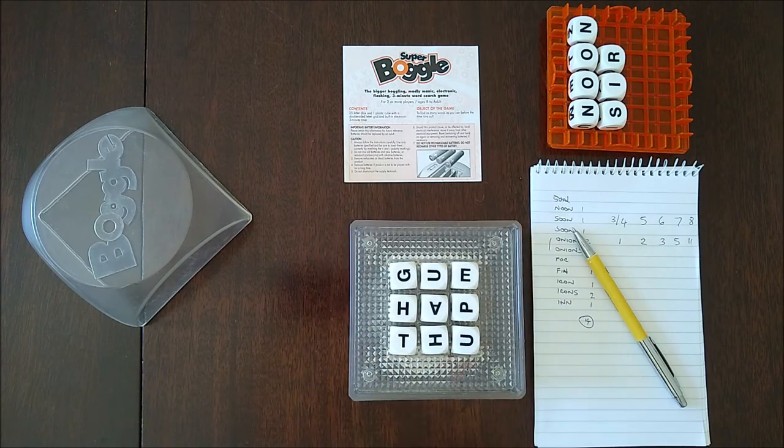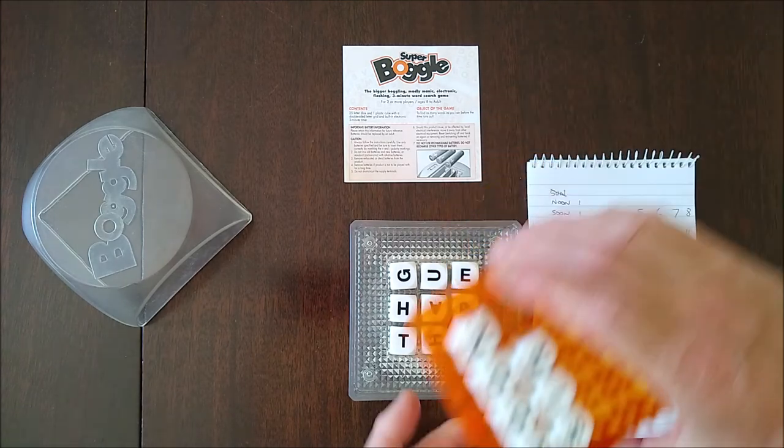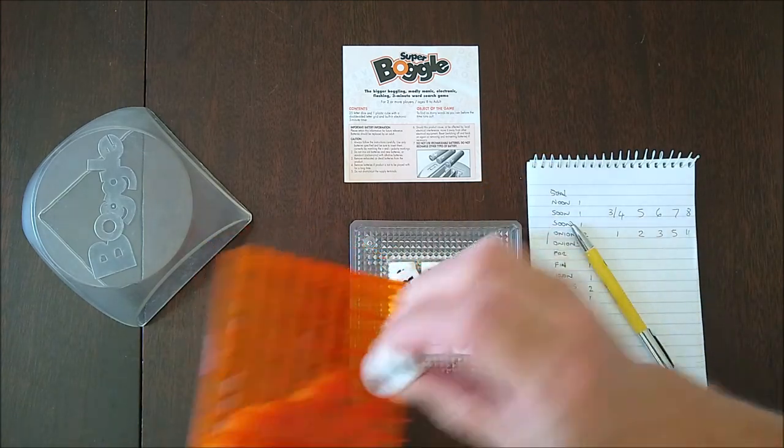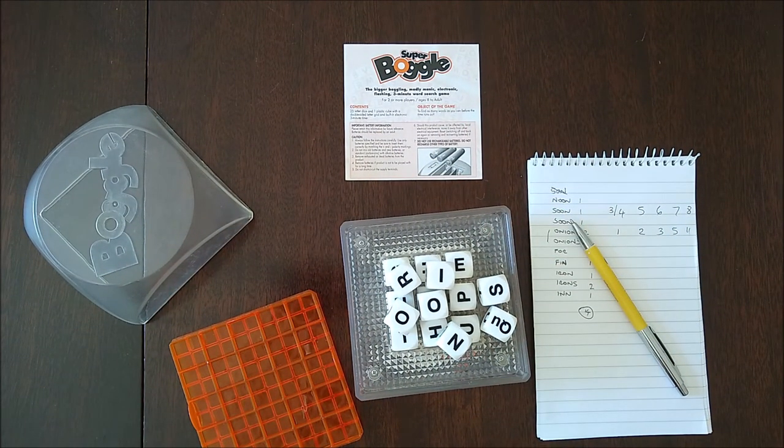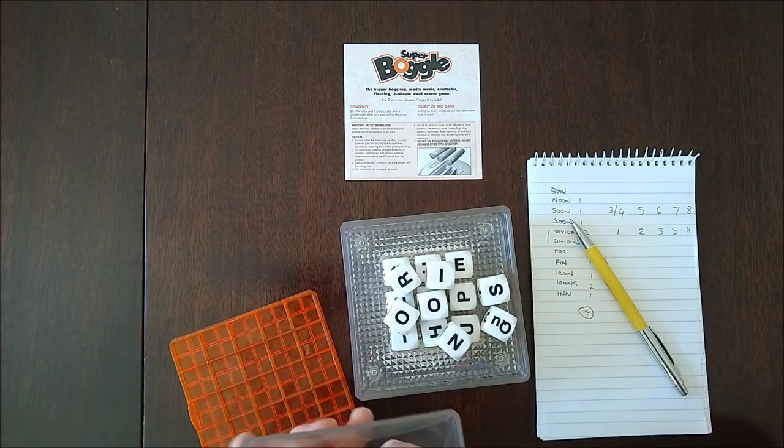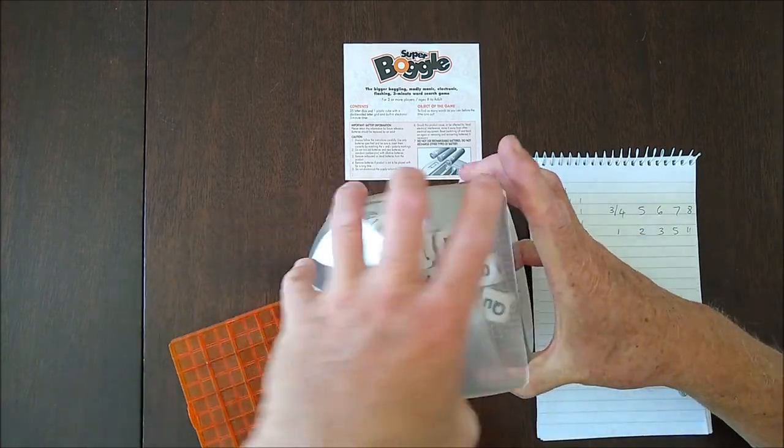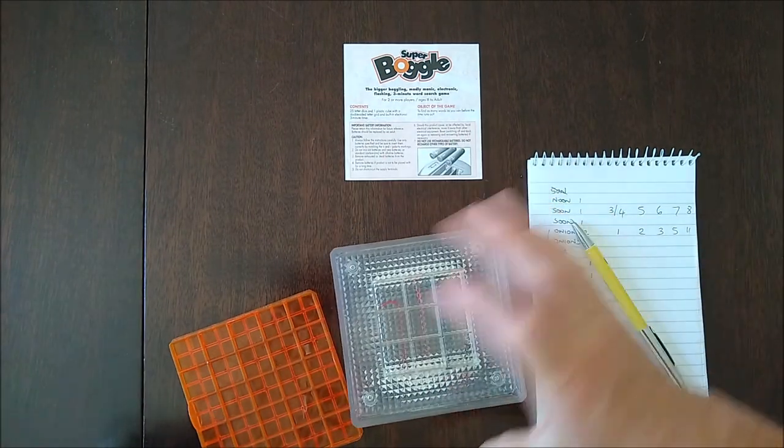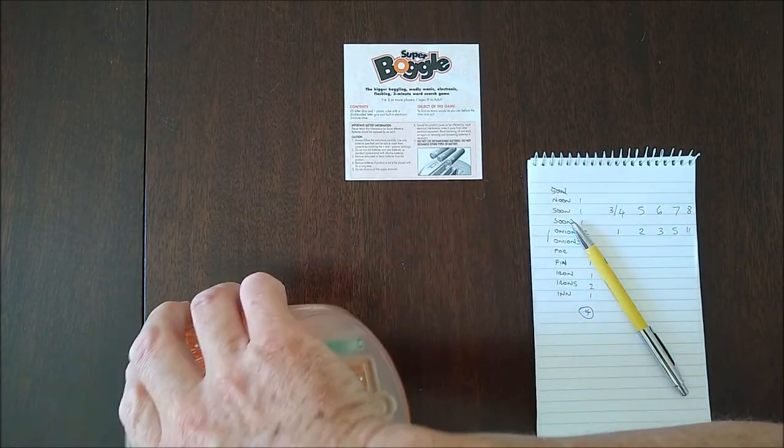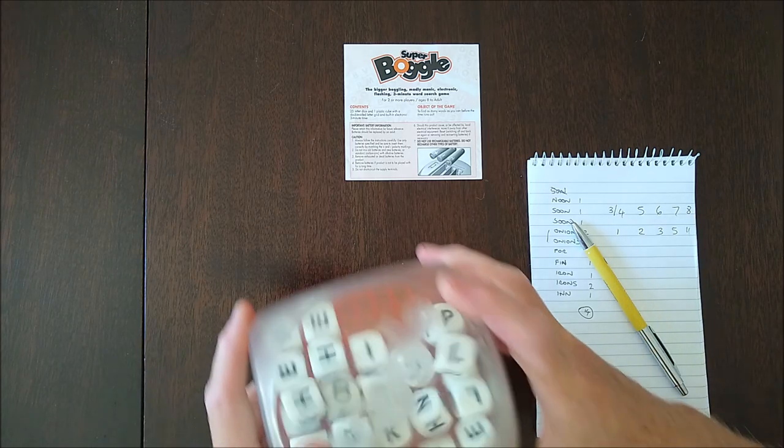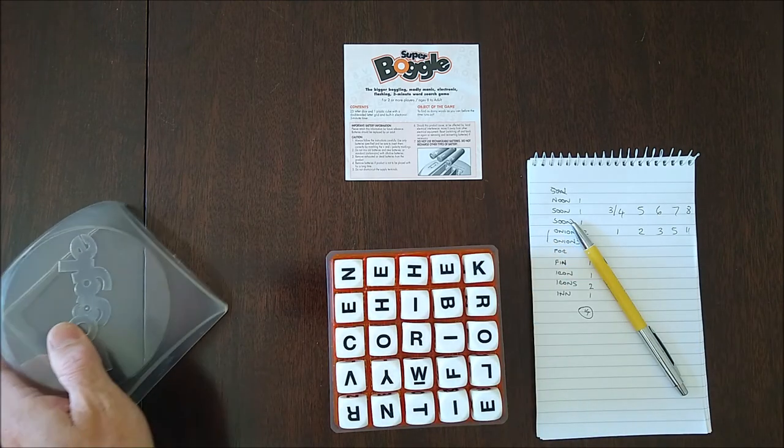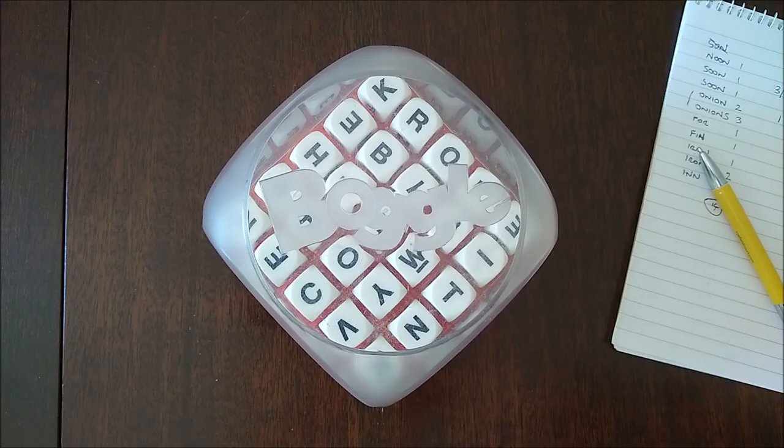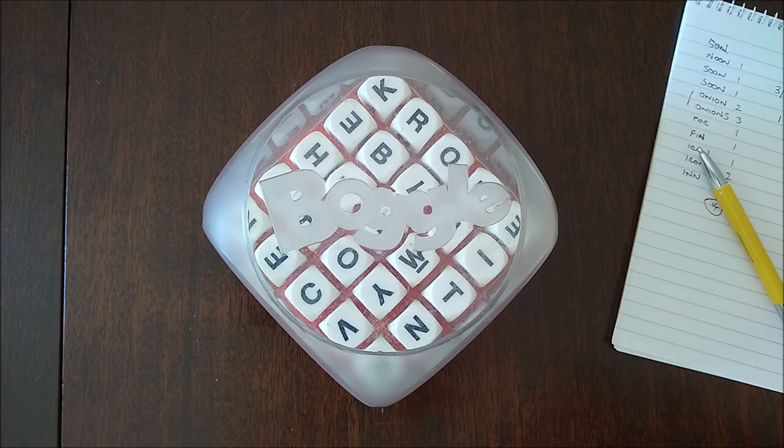I find that more difficult and probably not as interesting. But on the back of the four-by-four is a five-by-five grid. So you can actually add nine more dice to make twenty-five, put them all in, and then have a five-by-five grid, which is great fun. So there it is—the three-minute word game, Boggle.